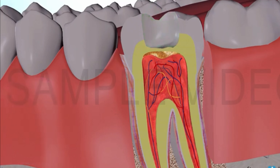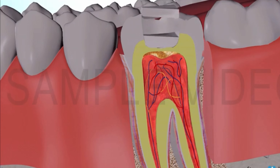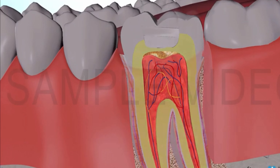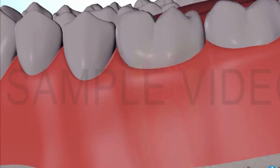An indirect pulp cap involves placing a calcium hydroxide lining at the bottom and a resin-modified glass ionomer cement on top. This is because calcium hydroxide is resorbable and would dissolve in saliva, so we protect it with the resin-modified glass ionomer cement.